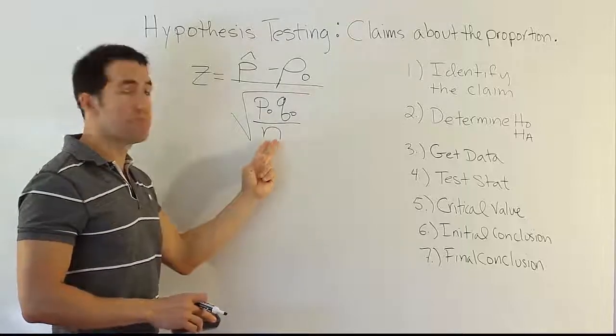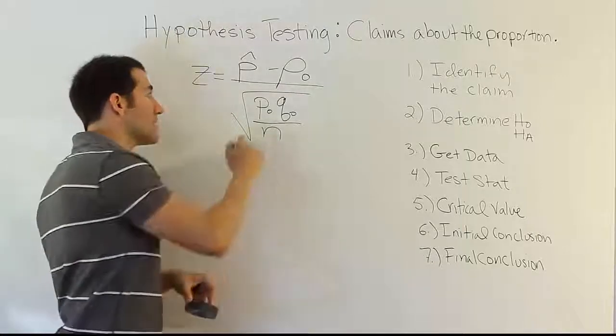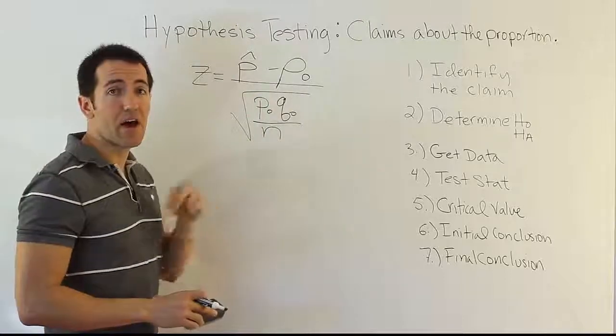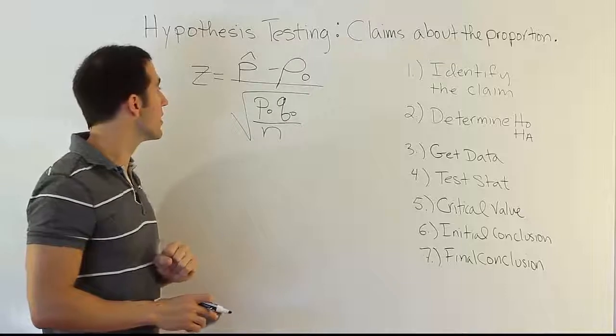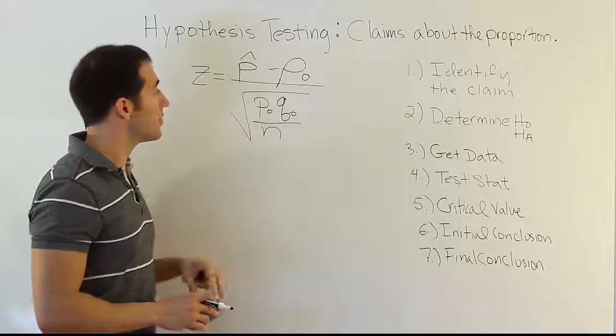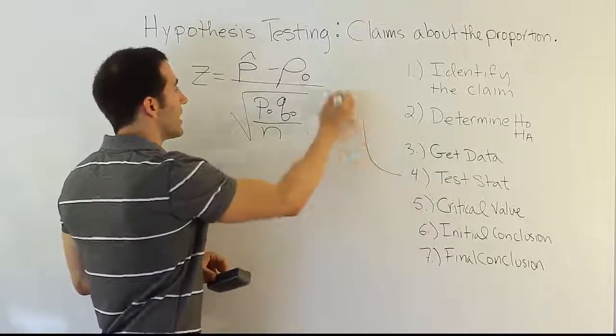And then we have n, of course, sample size. All of that's under the square root, and that's the standard error for p-hat under the assumption that the null hypothesis is true. And so that becomes our test stat formula. So it's a little more complicated looking, but that's it.